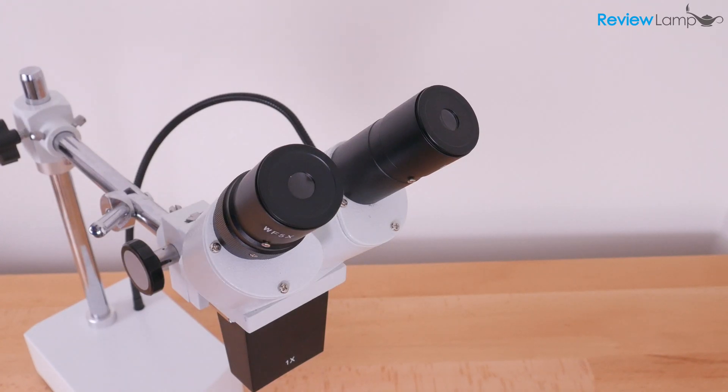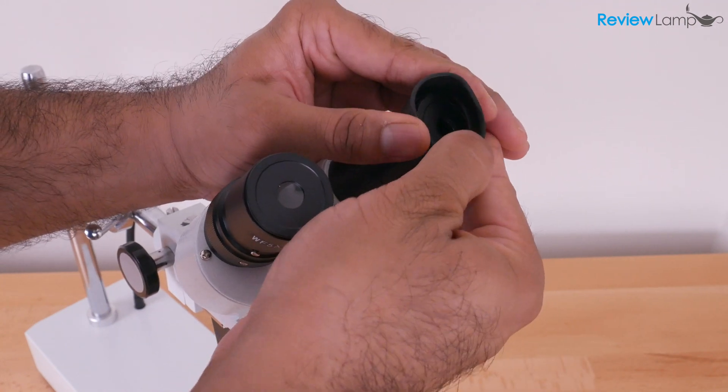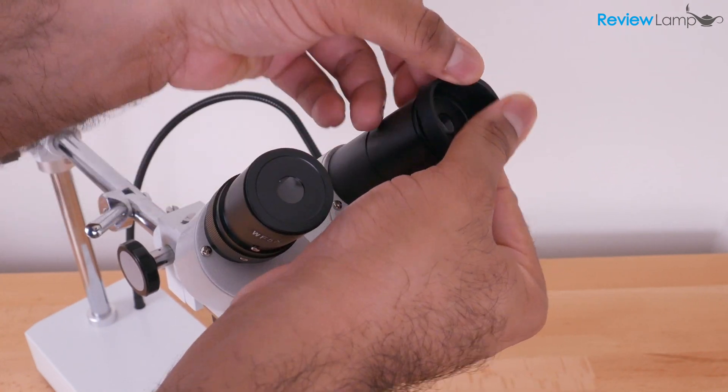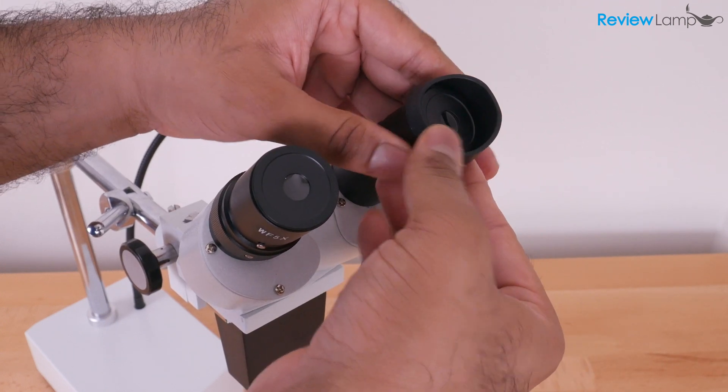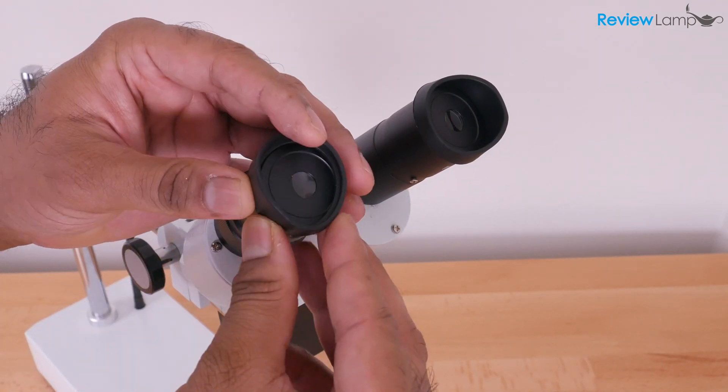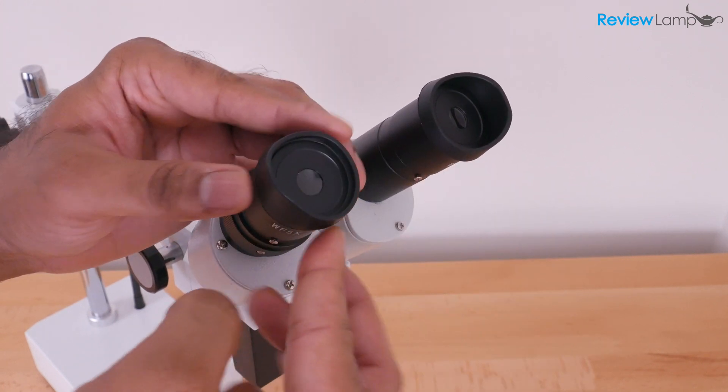So the eyepieces are now installed. And I'm just going to put the eye cups in. And they just sort of stretch over the end of the eyepiece and stretch it till it sits in that groove on the eyepiece. Let's do the same on the other side. Slot it into that groove on the eyepiece, stretch it over till it sits in that groove.